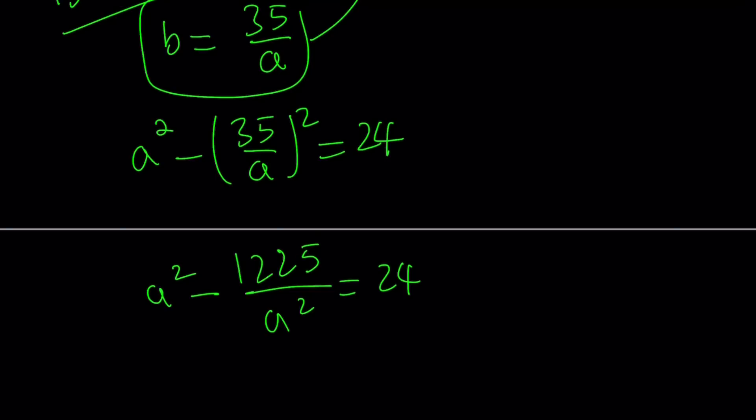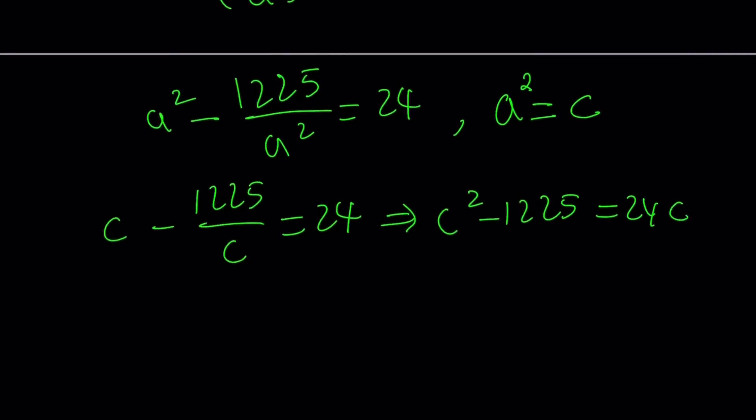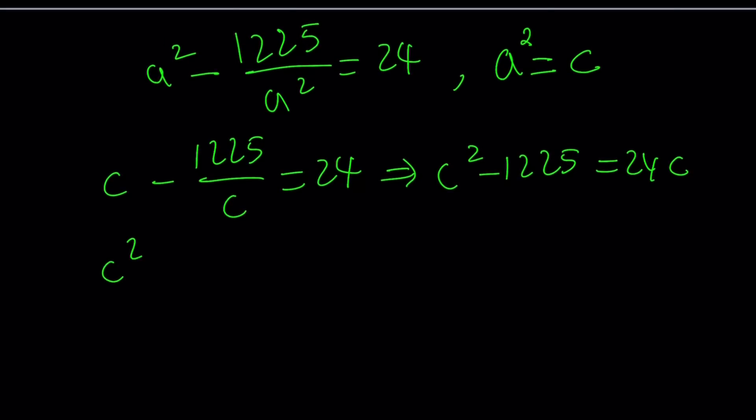At this point, I'm going to use substitution one more time, because this is going to turn into a biquadratic or quartic equation with no a cubed in it. We can set a squared equal to c. That gives us c minus 1225 divided by c equals 24.